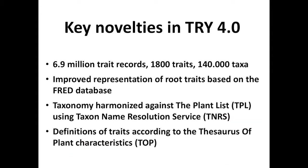We do versioning of the TRY database, and after 10 years we are now at version 4. This will have more data: 6.9 million trait records for 1,800 traits and 140,000 taxa. This higher number of taxa is because we are now able to use the Plant List as a species backbone via the taxon name resolution service, and we can resolve not only species but subspecies — giving us about 140,000 accepted taxa.